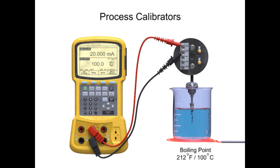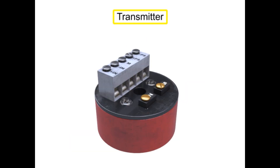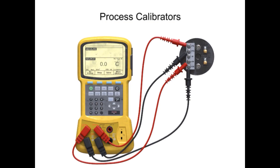After the sensor accuracy is confirmed, the next step is verifying the accuracy of the transmitter using the process calibrator. The calibrator provides an input signal to the transmitter that simulates the output of the sensor at multiple measurement points.